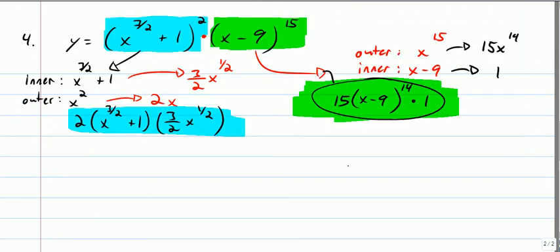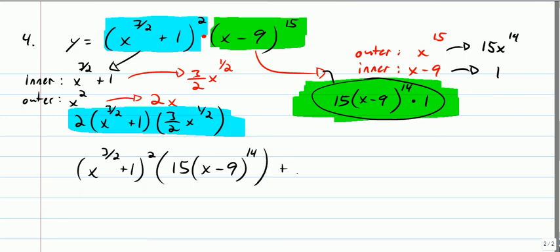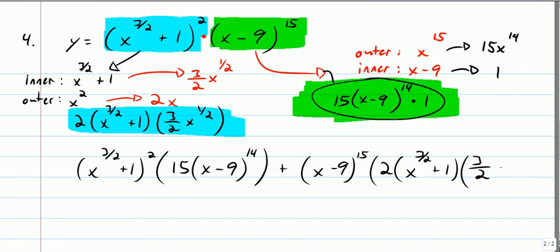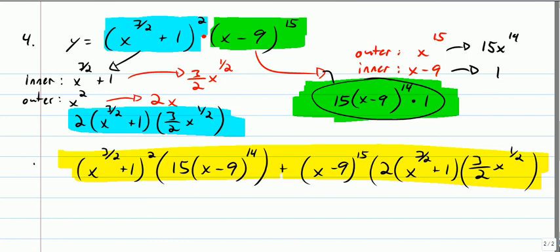New page for the final answer. y prime equals: x to the three-halves plus 1, squared, times 15 times x minus 9 to the 14th, plus x minus 9 to the 15th, times 2 times x to the three-halves plus 1, times three-halves x to the one-half. Not worried about simplifying right now — so there is y prime for number 4. That's one page of the assessment and we've got a key made for it; hopefully that helps you out.